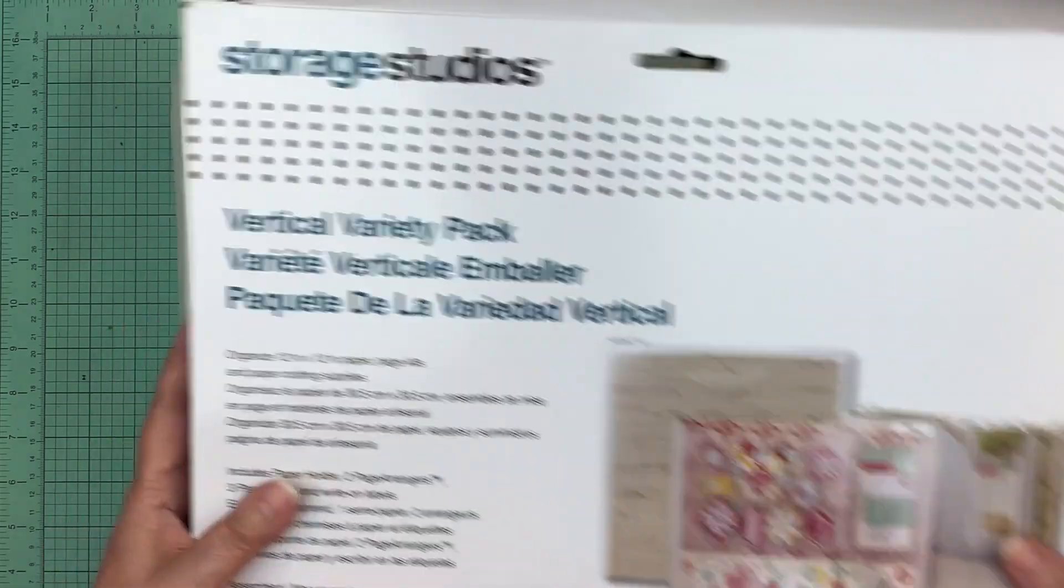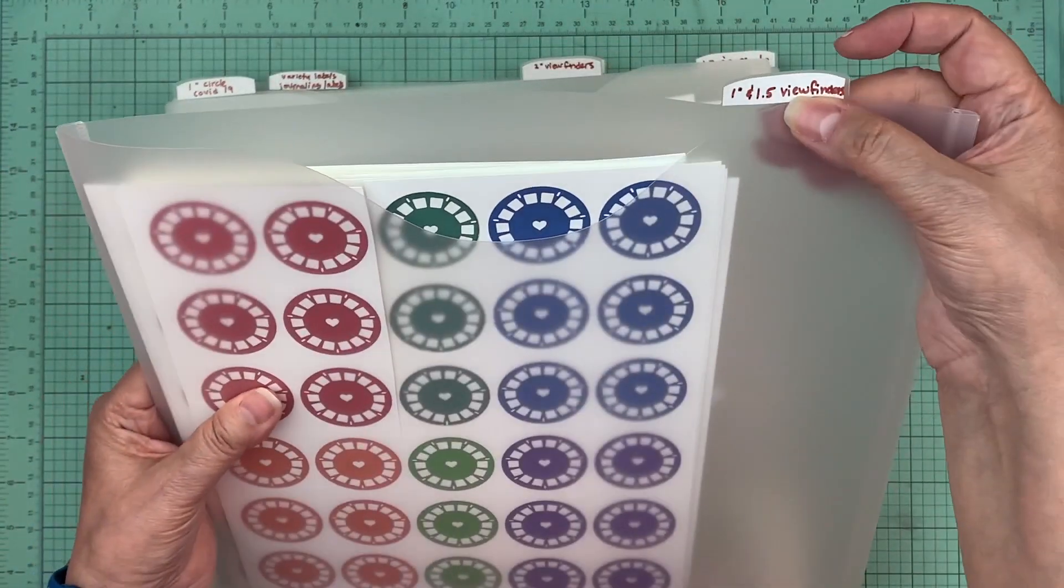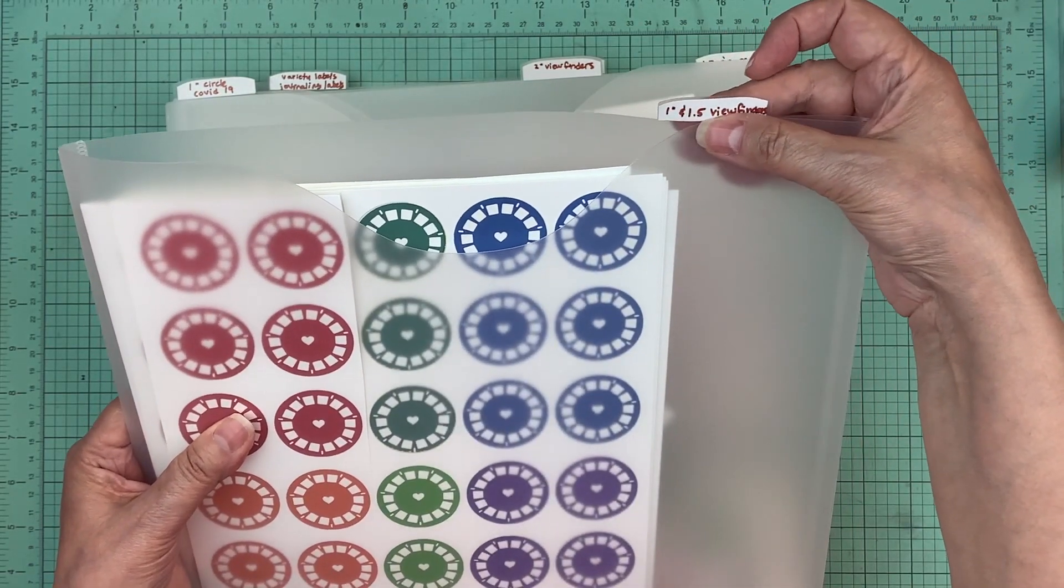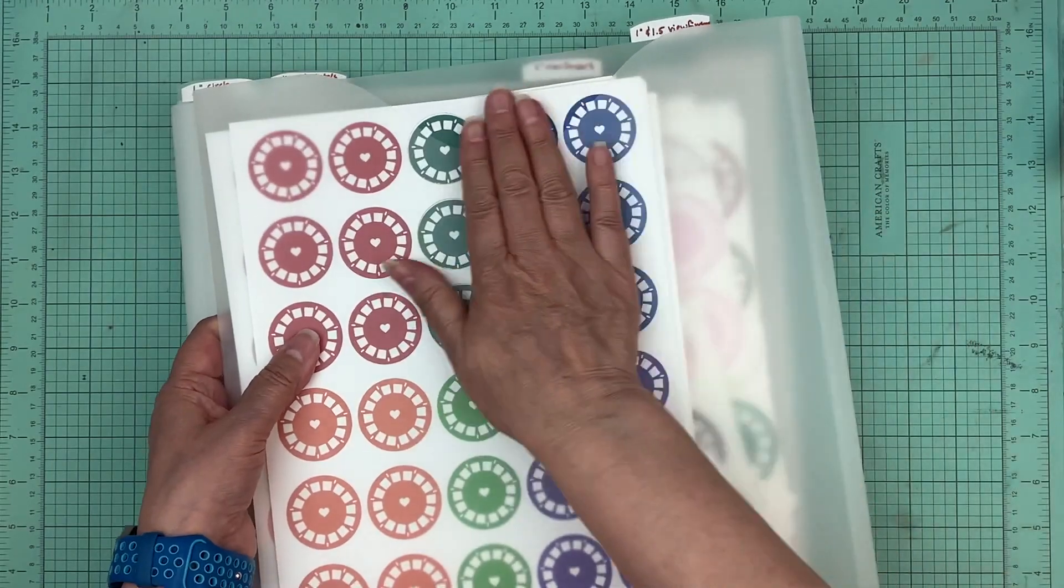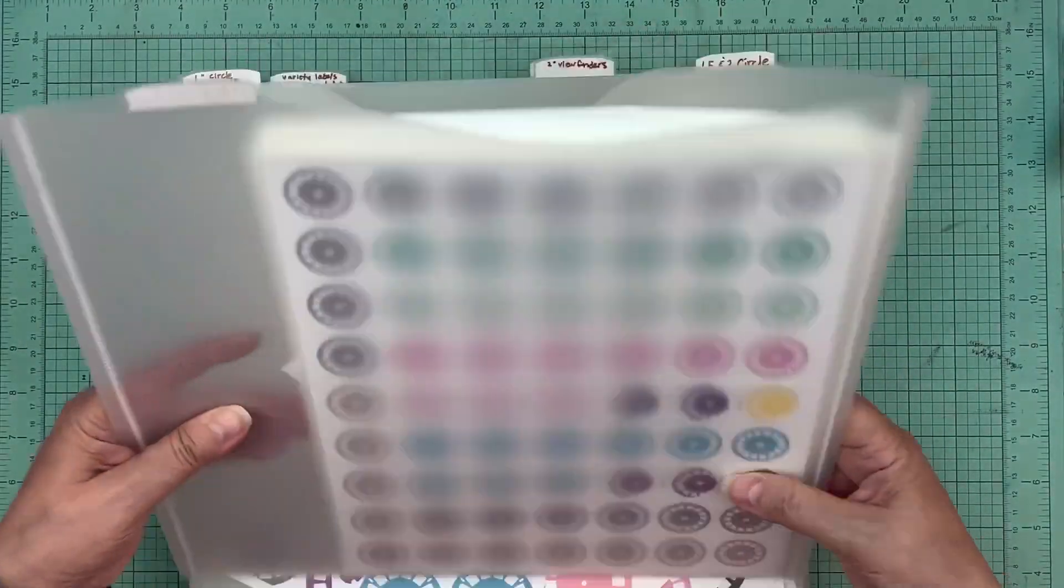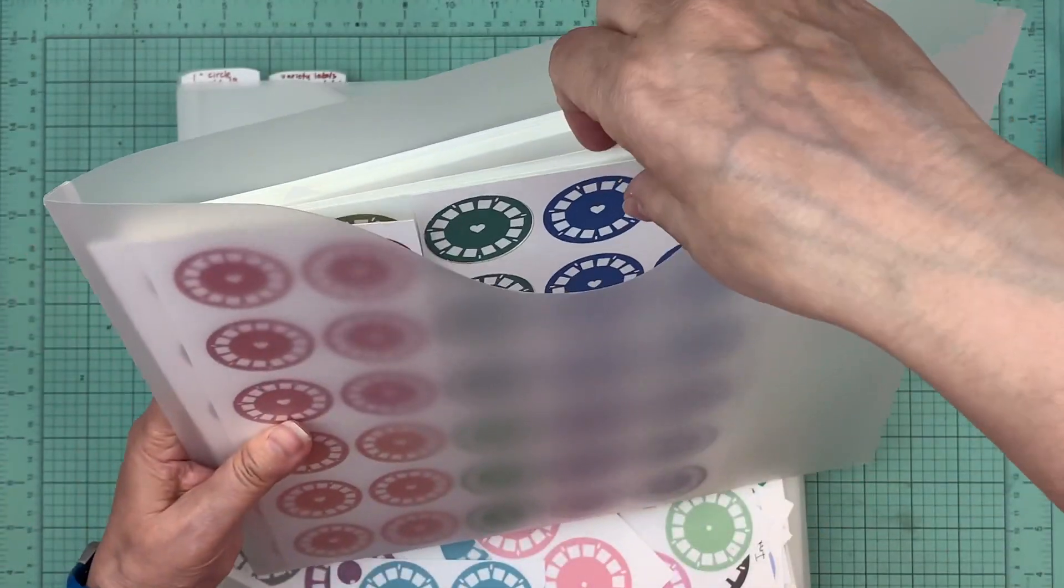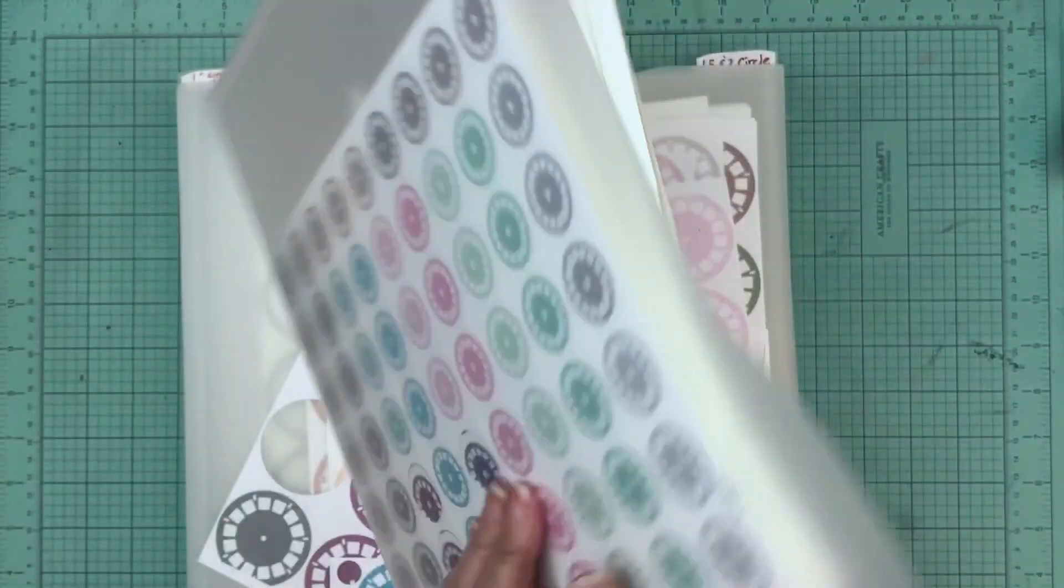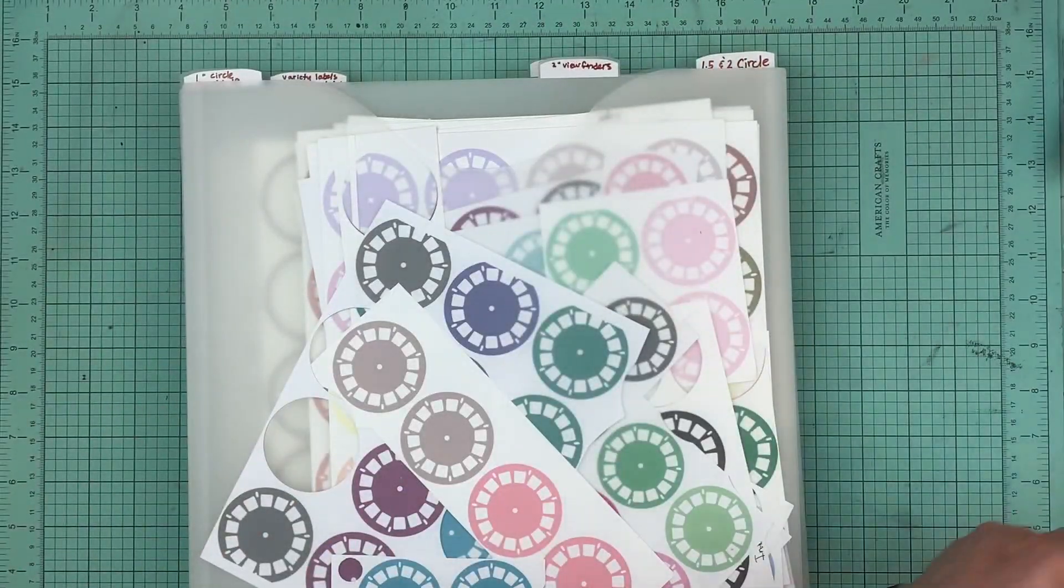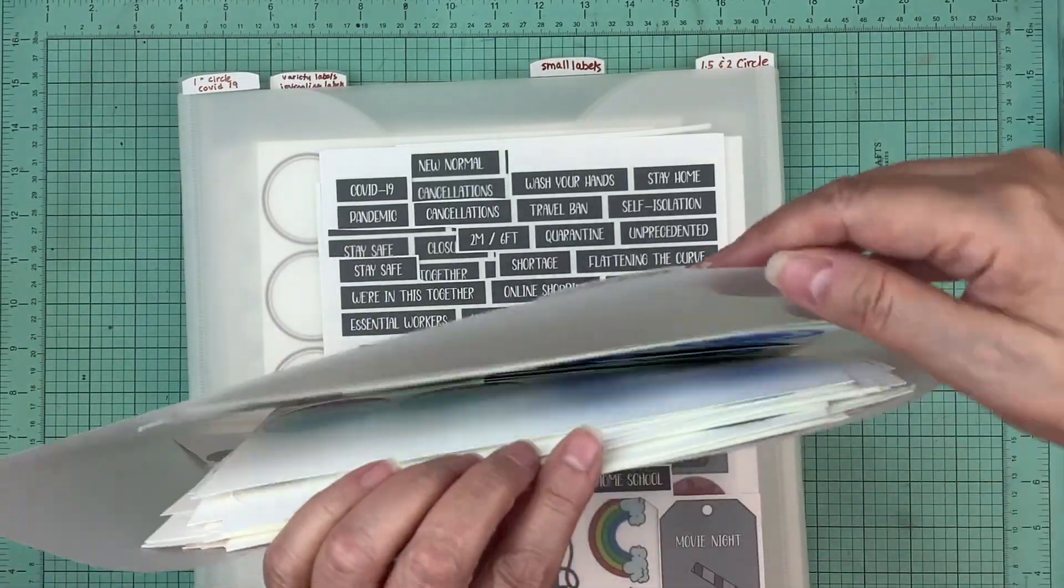Then what I did was, there were little labels and I in this case I put one and one and a half viewfinders. I have the one and a half on this side and then I have the one inch on this side, so they're basically back to back. So then I can easily, you know, if I want the one and a half or if I want the one inch. So now everything's all separated until I can punch them out. Now I had quite a bit of two inch viewfinders.